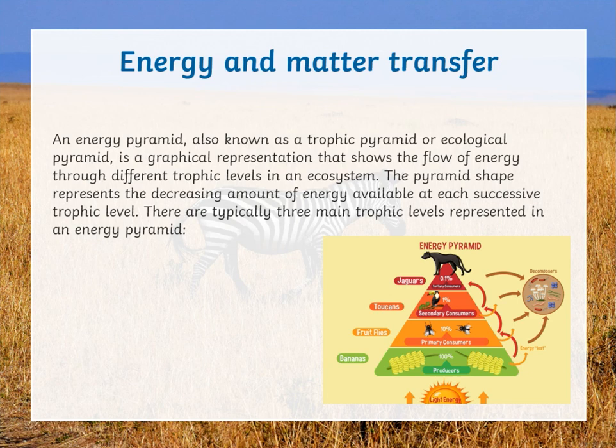There are typically three main trophic levels represented in an energy pyramid: producers, primary consumers, secondary consumers, and tertiary consumers.